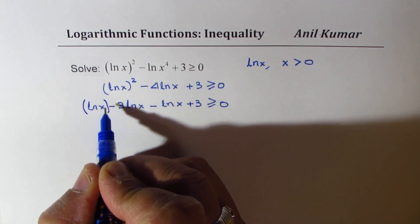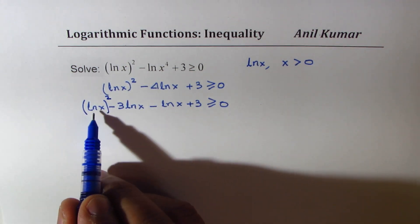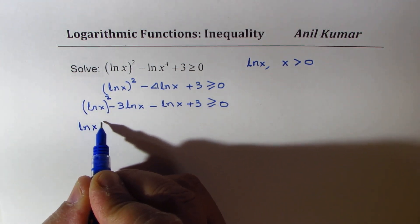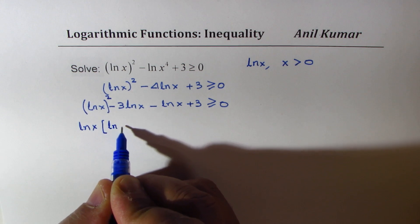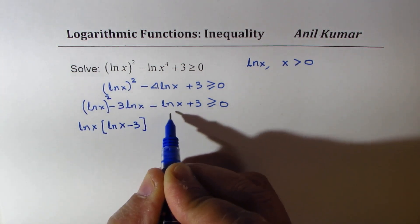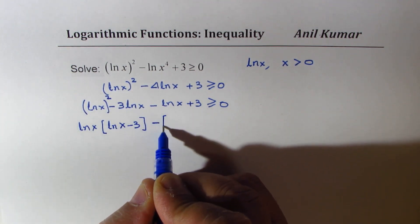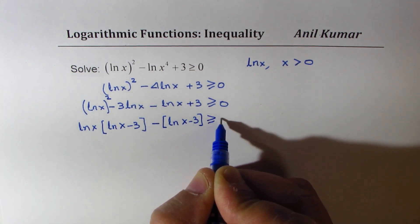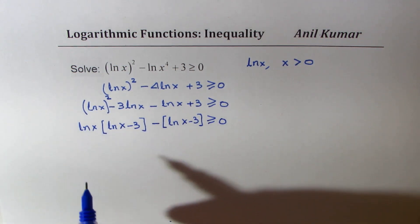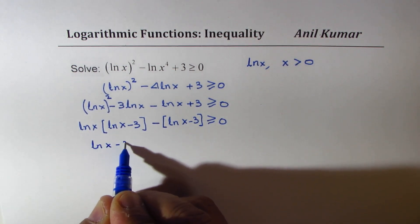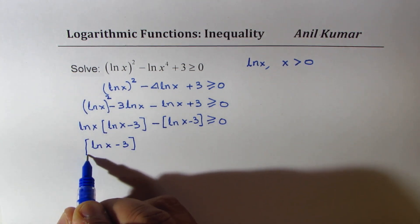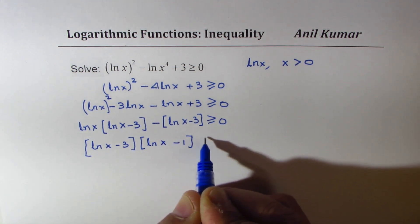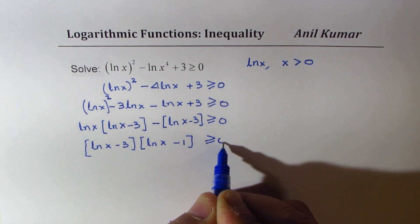So let's factor ln x. We get ln x and we have ln x minus 3. Here if I take minus common we get ln x minus 3 greater than or equal to 0. Now ln x minus 3 is common. The other factor is ln x minus 1 greater than or equal to 0.